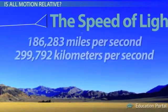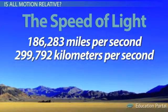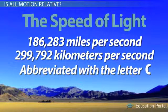The speed of light is 186,283 miles per second, or 299,792 kilometers per second. And we abbreviate the speed of light with the letter C.